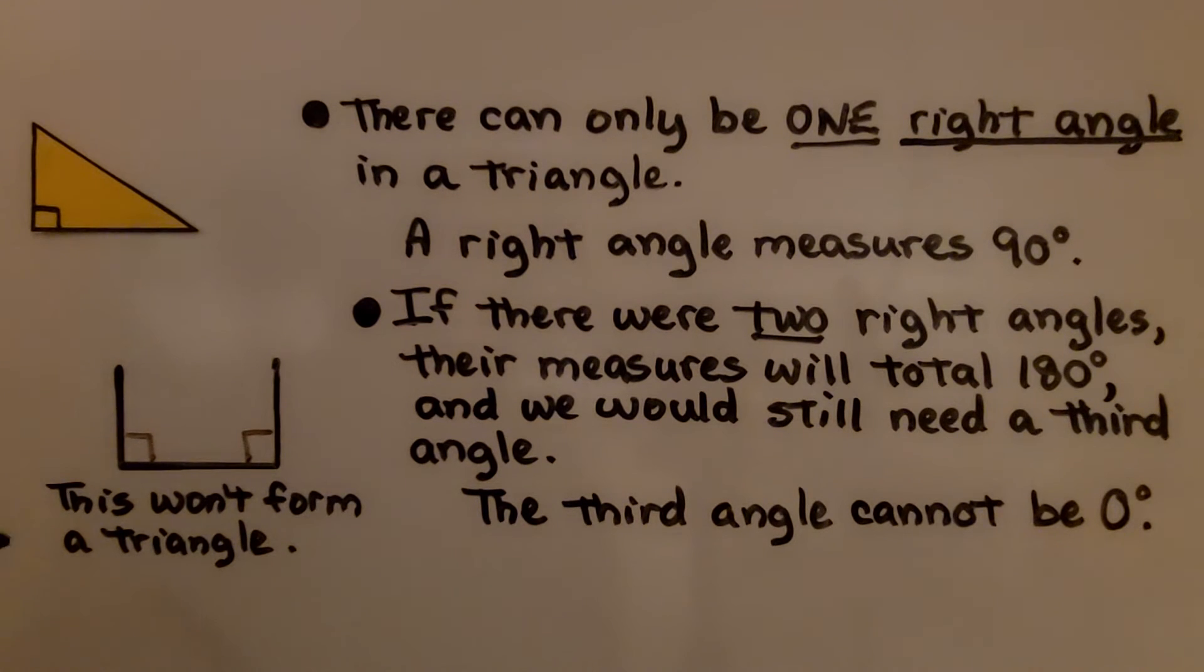It needs three sides, and it's got three sides, but because it has two right angles, it can't form a triangle. There can only be one right angle in a triangle.